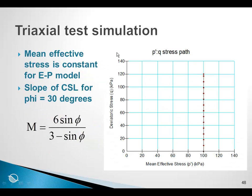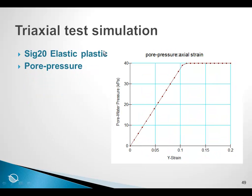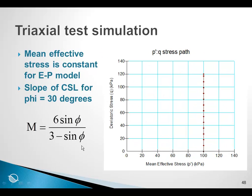Now, in an elastic-plastic model, the mean effective stress is constant during an undrained test. And in order to do an interpretation of these tests, it's useful to understand this relationship here, where this is the slope of the critical state line.